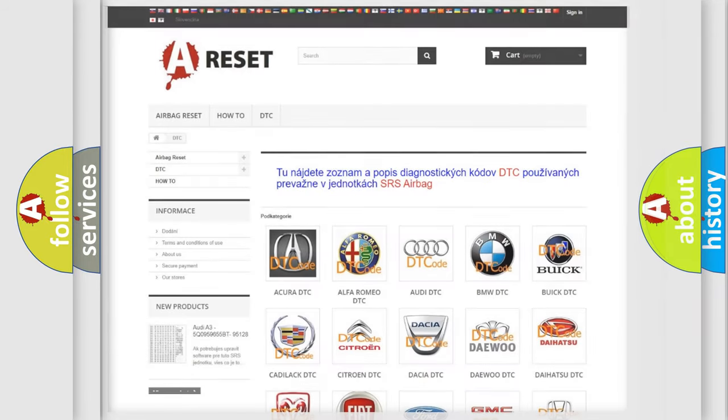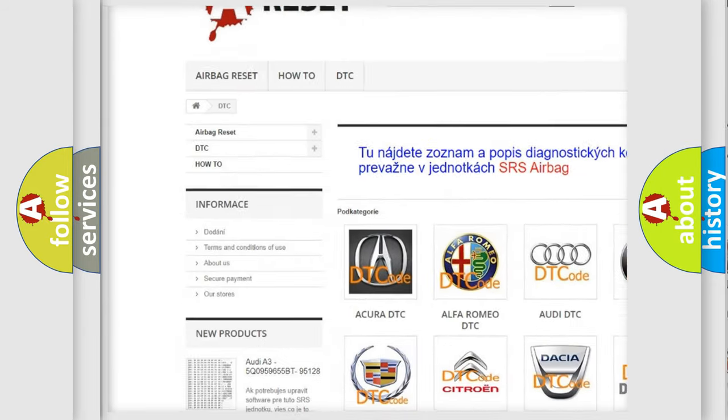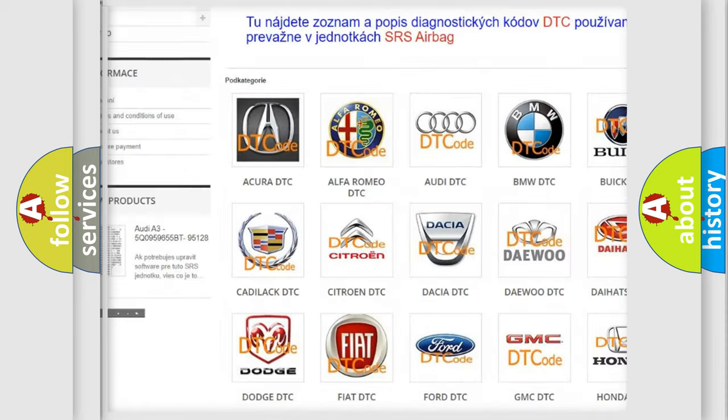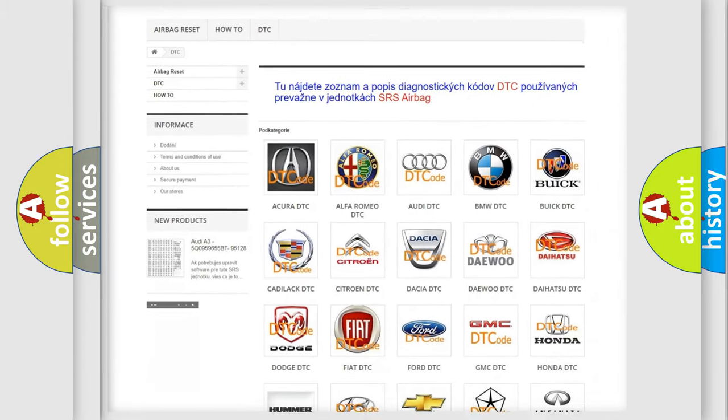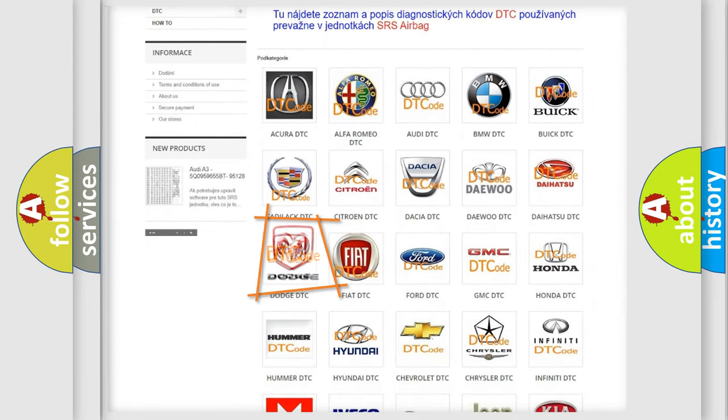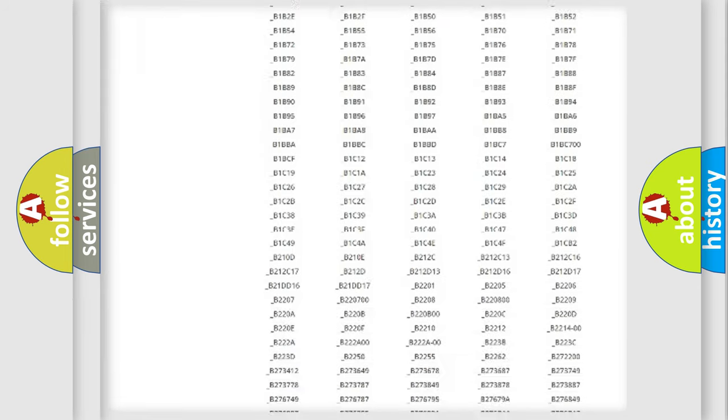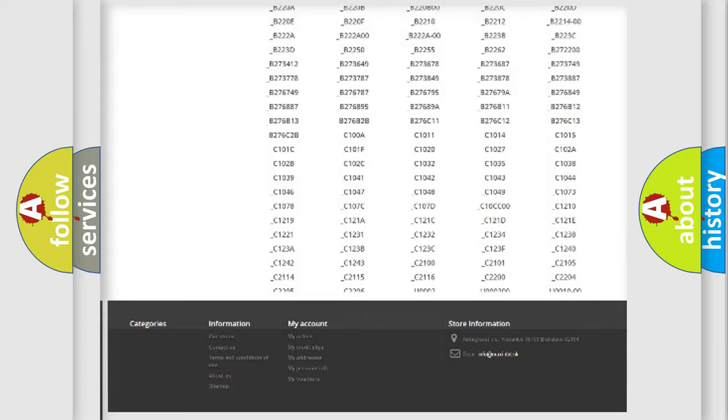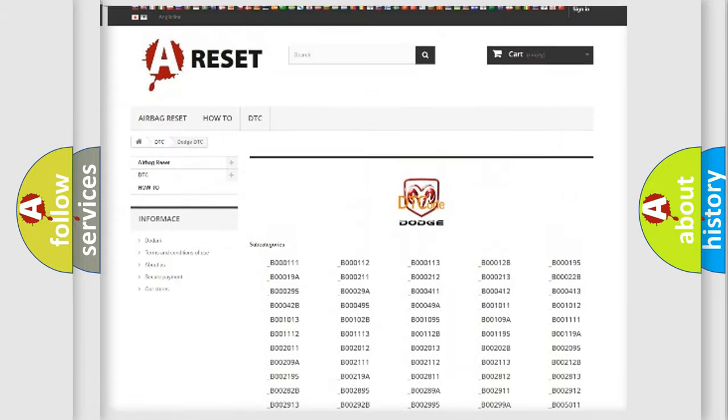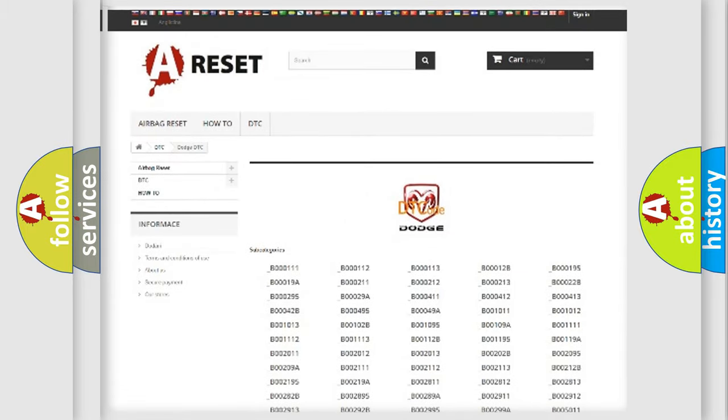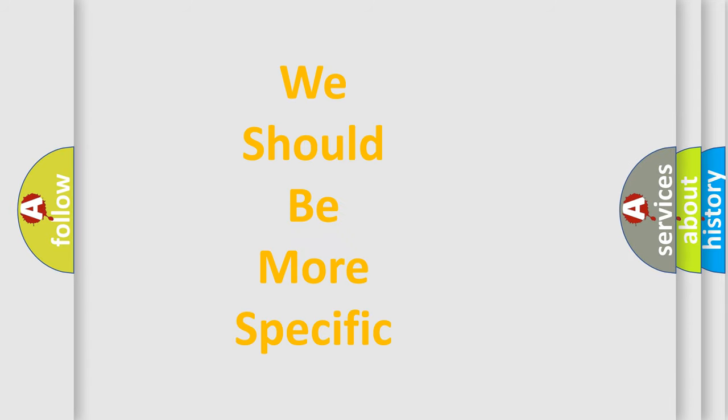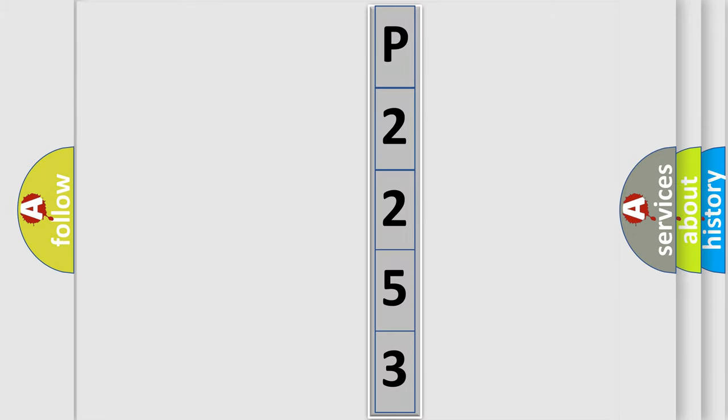Our website airbagreset.sk produces useful videos for you. You do not have to go through the OBD2 protocol anymore to know how to troubleshoot any car breakdown. You will find all the diagnostic codes that can be diagnosed in Dodge vehicles, plus many other useful things. The following demonstration will help you look into the world of software for car control units.